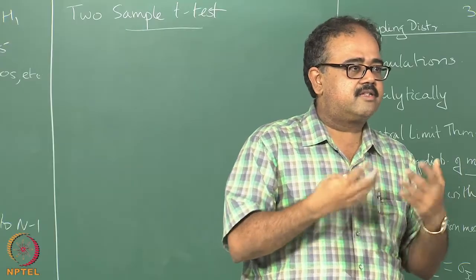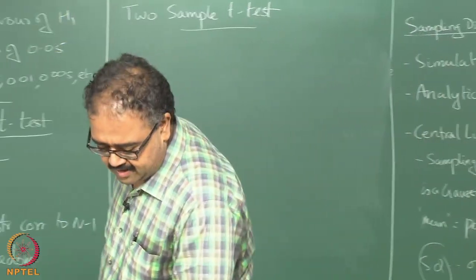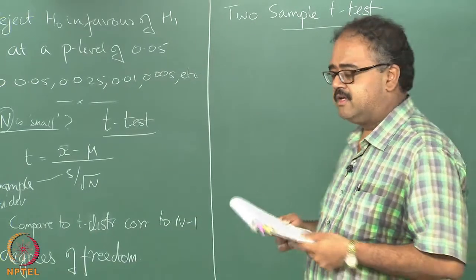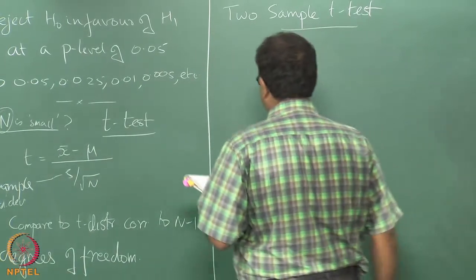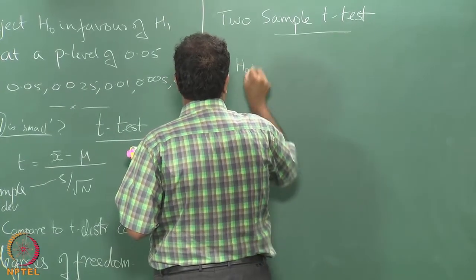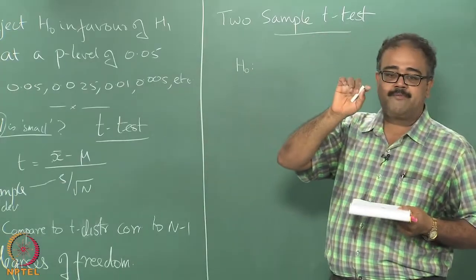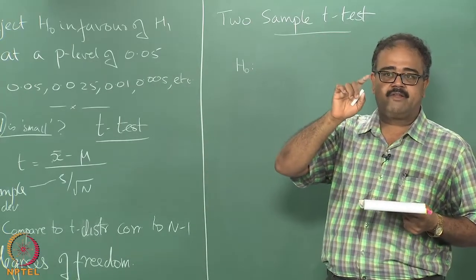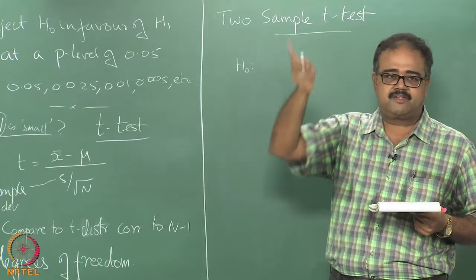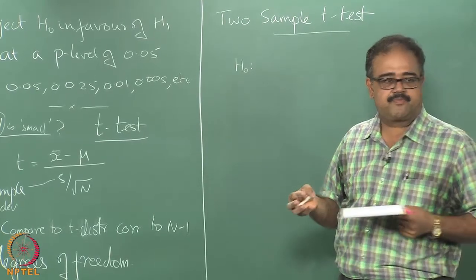That is the kind of question we would like to ask. A 2-sample t-test allows us to do that — compare means of 2 samples to see if they are drawn from the same population or different. When talking about same population or different, we are only asking: are the means the same or different? The assumption we are making is that the standard deviations are all the same.